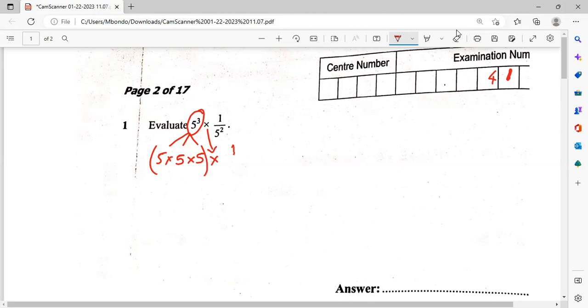We are going to have 1 over 5 multiplied by 5. This is what we are going to have this side. So it depends on how you want to do it, really. If you want, at this point you can simplify it.